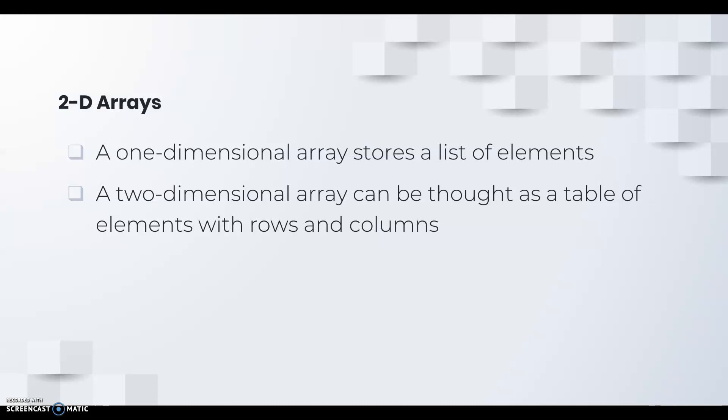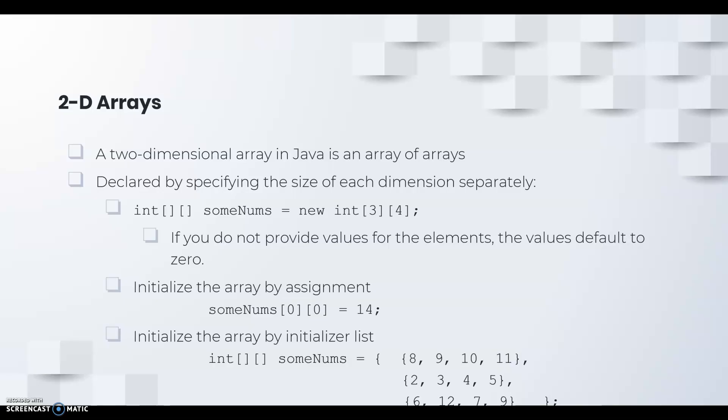A one-dimensional array stores a list of elements, whereas a two-dimensional array can be thought of as a table of elements with both rows and columns. A two-dimensional array is an array of arrays in Java.